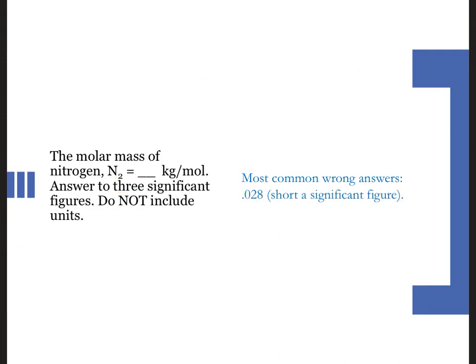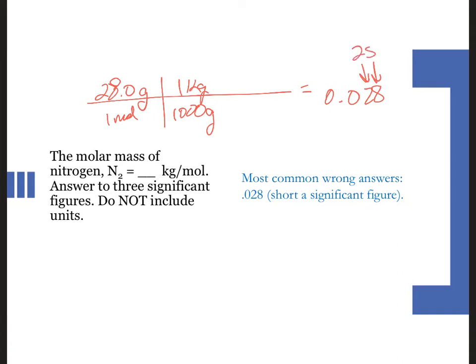All right, so sig figs killed us on this one again. If we start out with 28 grams of N2, and we want to convert grams to kilograms. All right, so we've got to move that decimal place. And we see that we get 0.028, but that is only two sig figs. We have to include this zero down here for bragging rights.